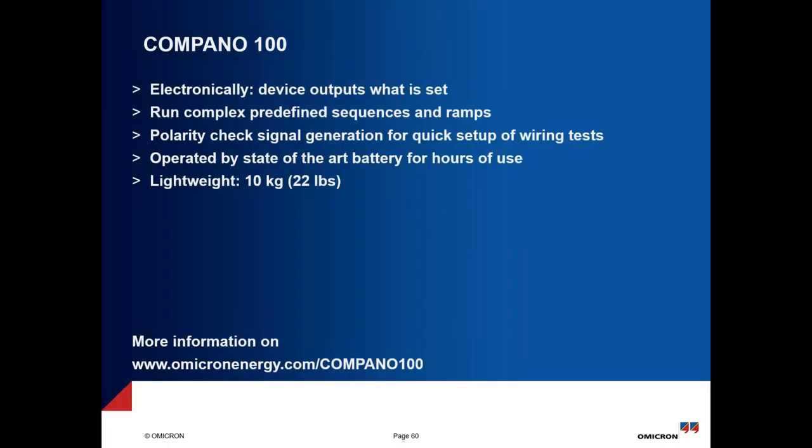The main benefits of COMBANO 100: run complex predefined sequences from RAM, polarity check signal generation for quick wiring check setup, operated by state-of-the-art battery for hours of use, and lightweight at around 10 kg. This was the last slide in our webinar today, and it's now time to open the Q&A session.